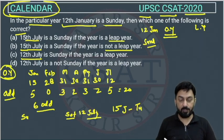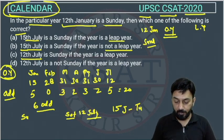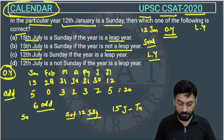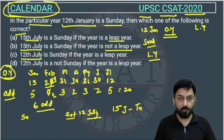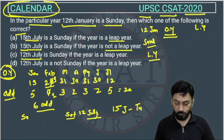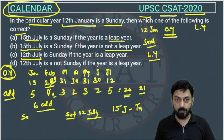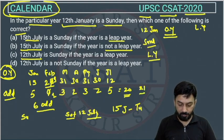Now we will consider the leap year case. If this is a leap year, all the values remain the same, except in February this 0 will get converted into 1 because there will be 29 days. So 1 odd day will be there for February. Total was 20, so this will become 21. If the total is 21, then the odd day count is 0 (since 21 mod 7 = 0).